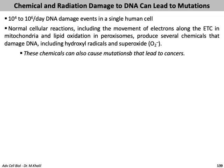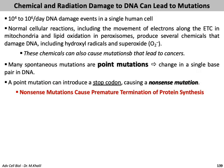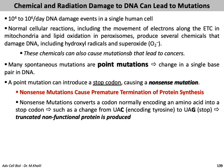Many spontaneous mutations are point mutations — a change in a single base pair in DNA. A point mutation can introduce a stop codon, causing a nonsense mutation, which results in premature termination of protein synthesis and production of a truncated protein. Nonsense mutations convert a codon that normally encodes an amino acid into a stop codon — for example, UAC encoding tyrosine changed to UAG, a stop codon — producing a truncated, non-functional protein.